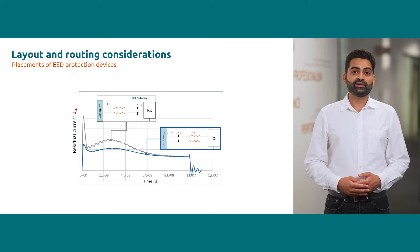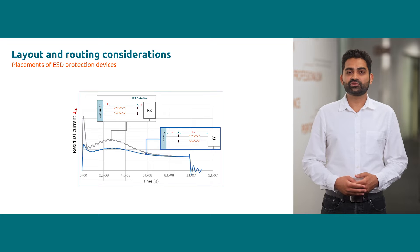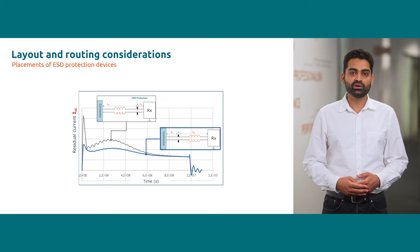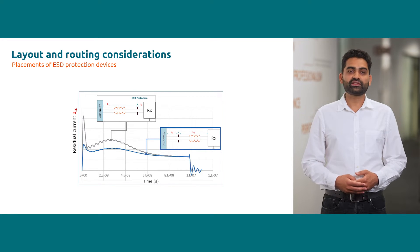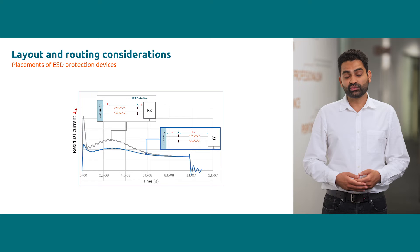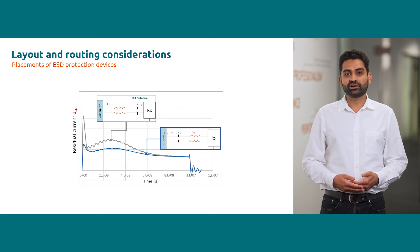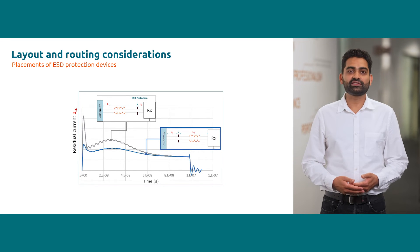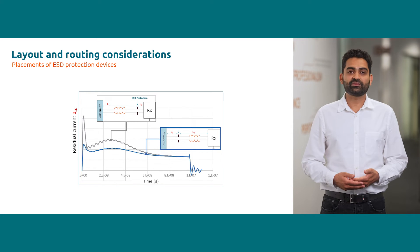The grey curve depicts the case in which an EST protection device was placed after the common mode choke, while the blue curve shows the electrical behavior of a PCB where the EST device was placed behind the common mode choke. As you can see, the amount of residual current that flows into the PHY is significantly reduced by placing the EST protection device behind the common mode choke.